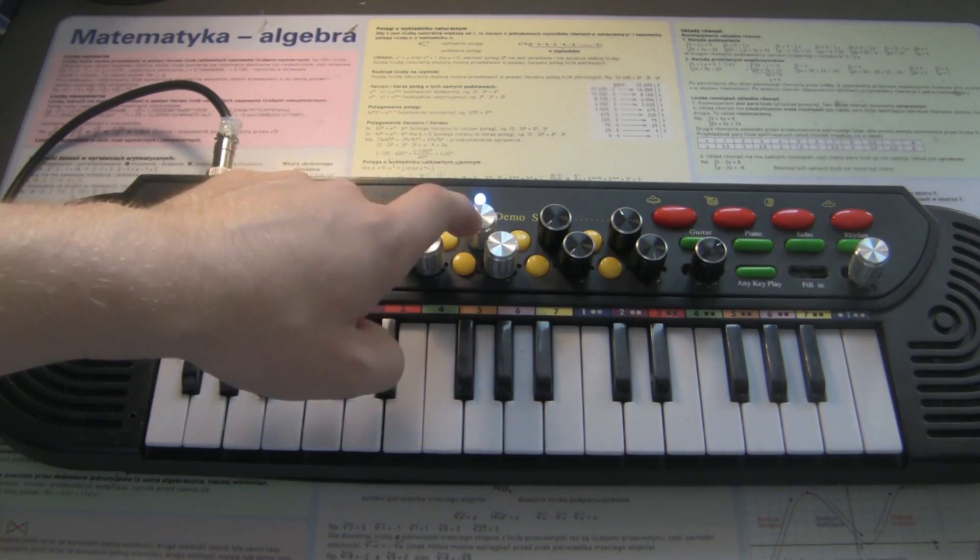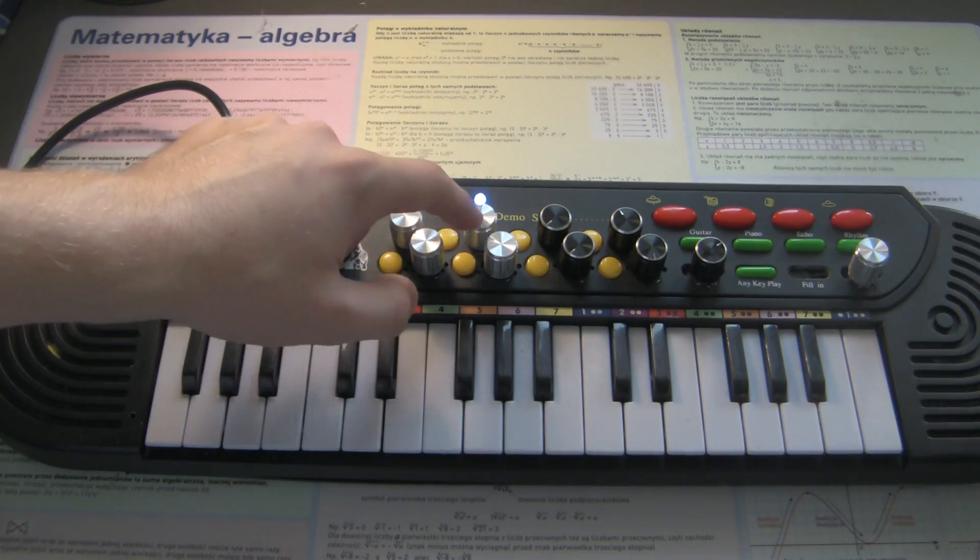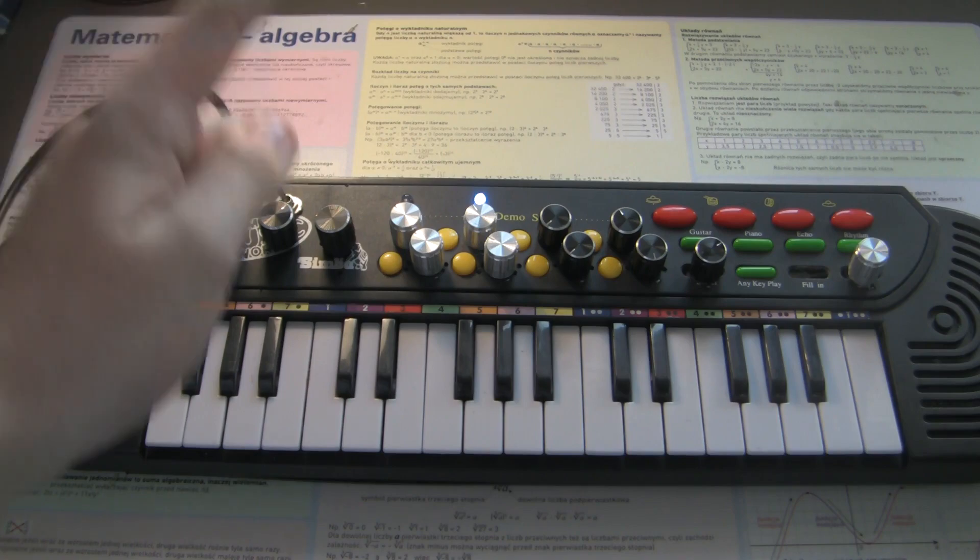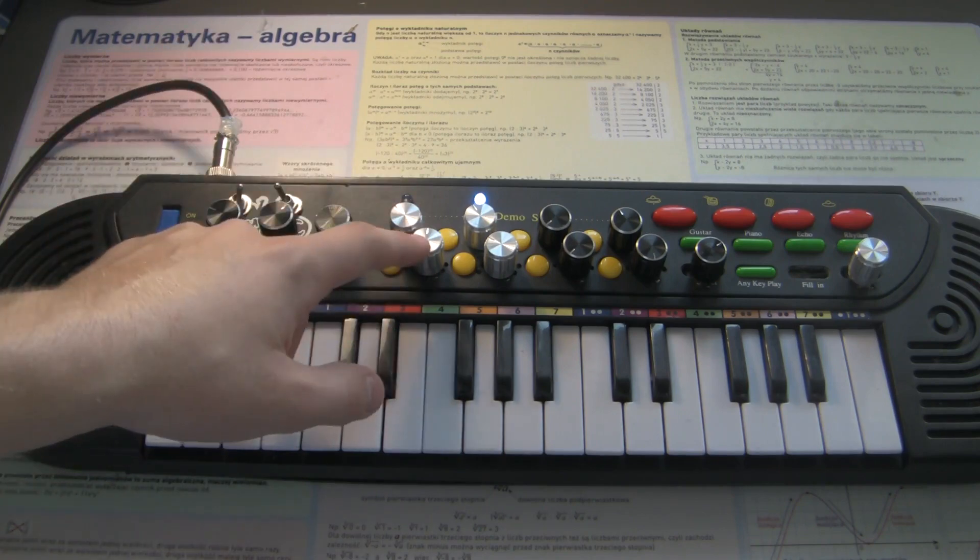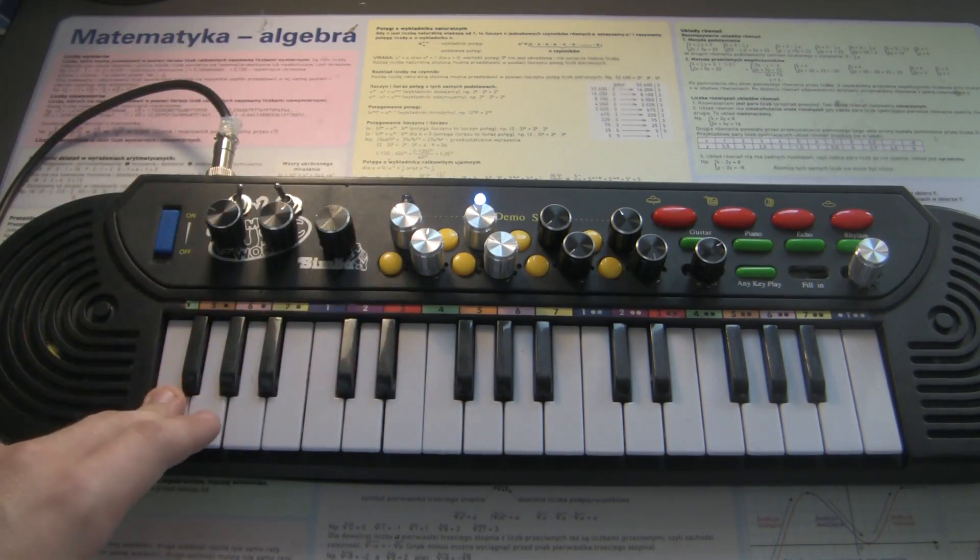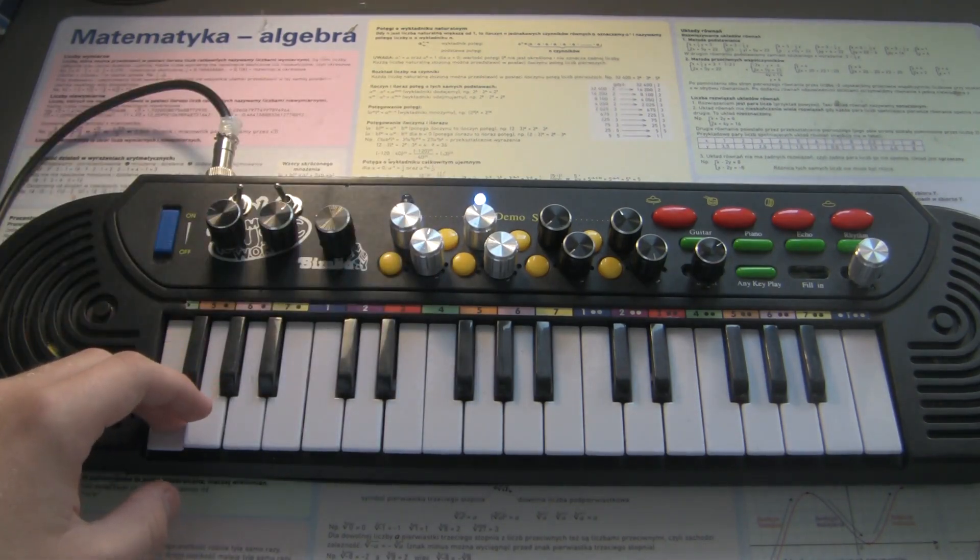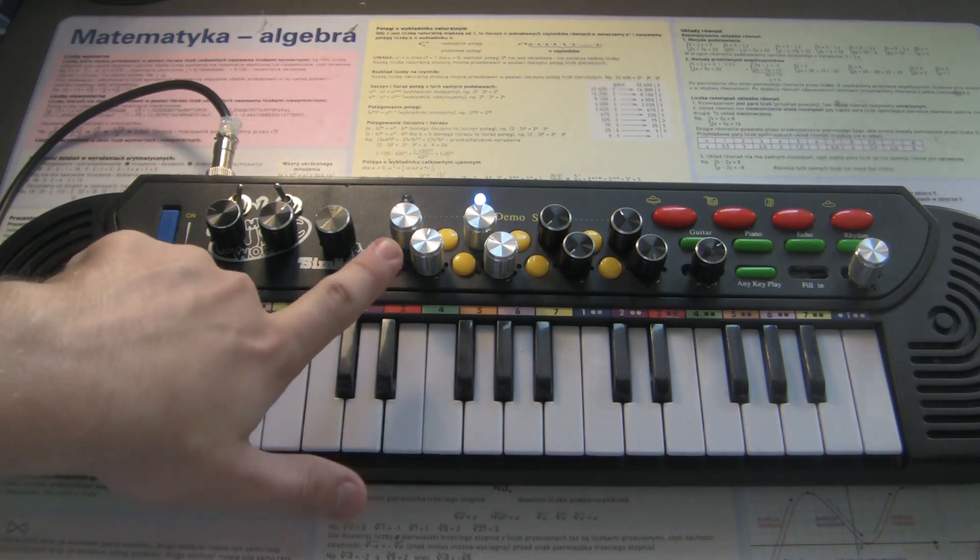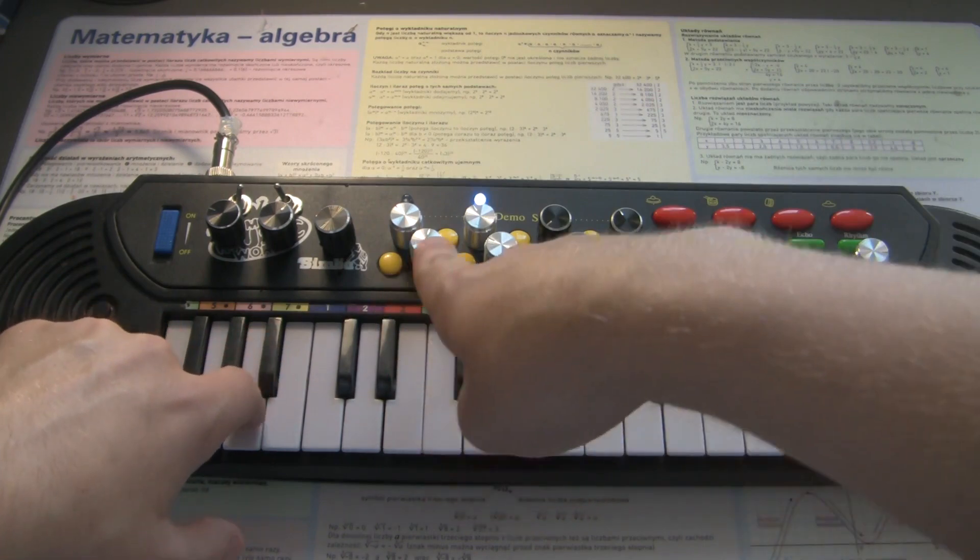Then when it reaches that value of 255, the next phase will start, the decay. And this, once again, sets the time of how long would you like for the note to take to go from 255 volume to the amount you set by this potentiometer, which is sustain. Here we have the attack. Now we are in the decay portion. And now we are on sustain. As you can see, the note doesn't change volume, because we already passed through these two potentiometers.